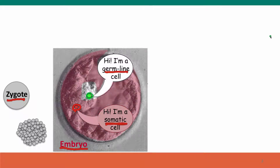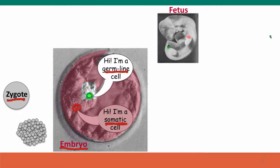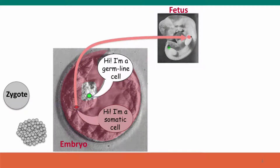As the embryo develops, most of the fetus comes from somatic cells — in particular, this patch of cells on the developing forearm limb bud came from this patch of somatic cells in the embryo. Only this very small patch of cells in the developing testes or ovaries came from the germline cells in the embryo.